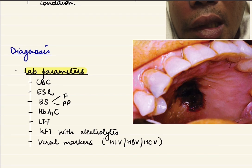How do we diagnose this disease? Firstly, lab parameters: we do routine blood tests including complete blood count, ESR, blood sugar both fasting and postprandial, HbA1c, liver function test, kidney function test along with electrolytes and viral markers.